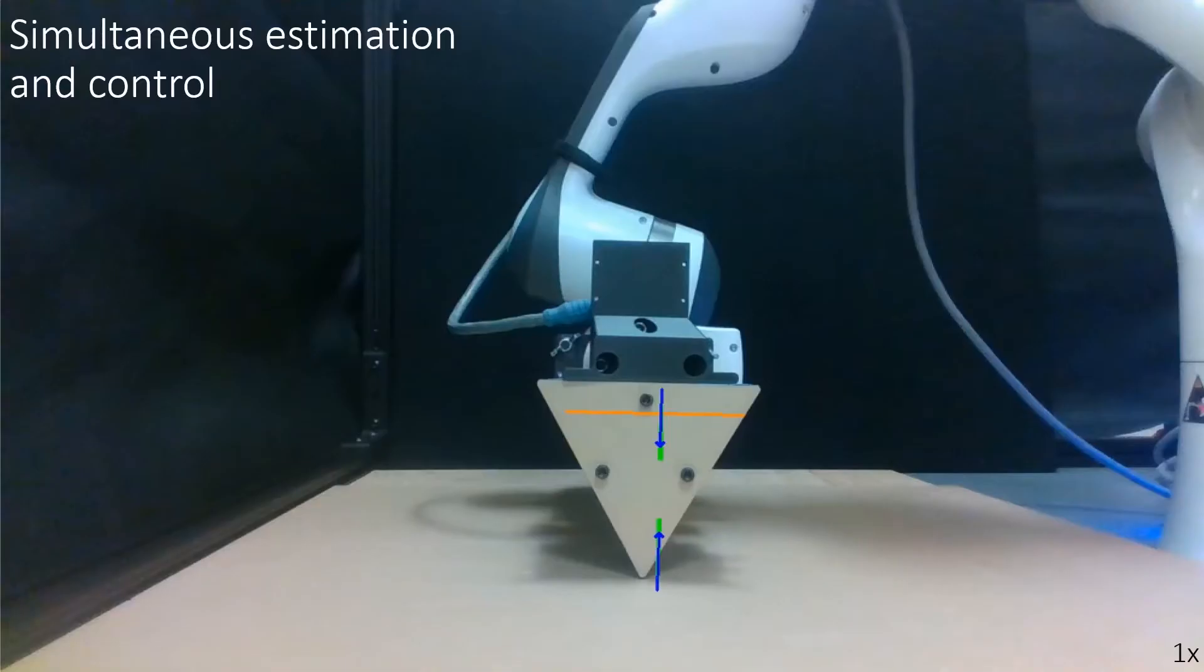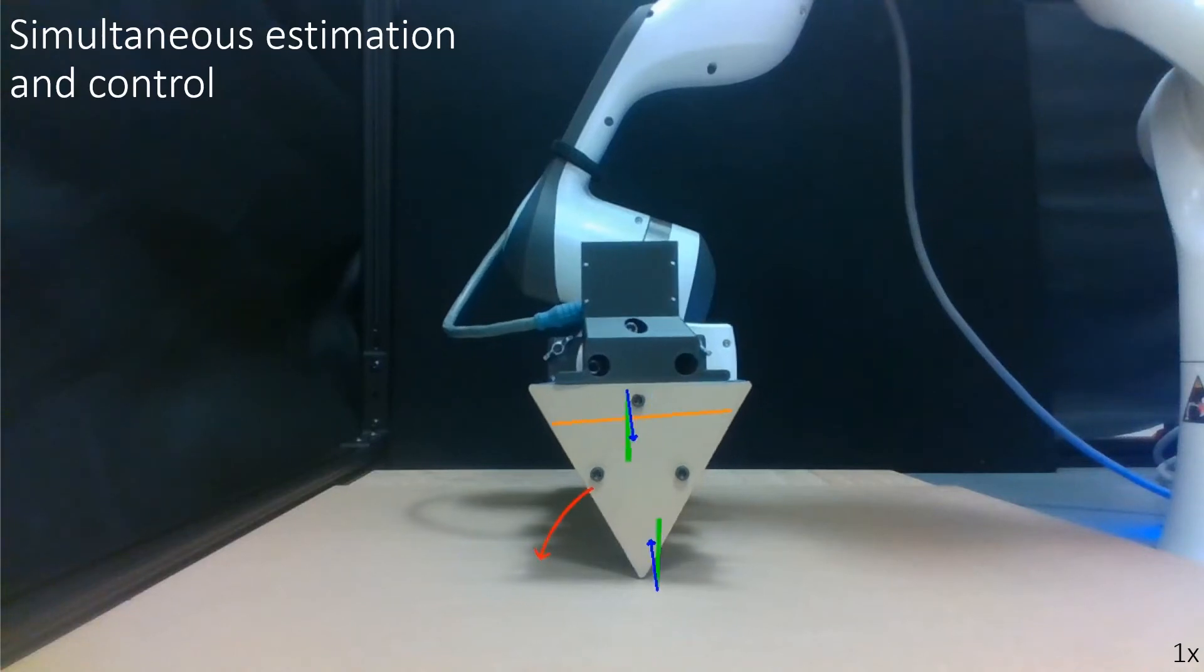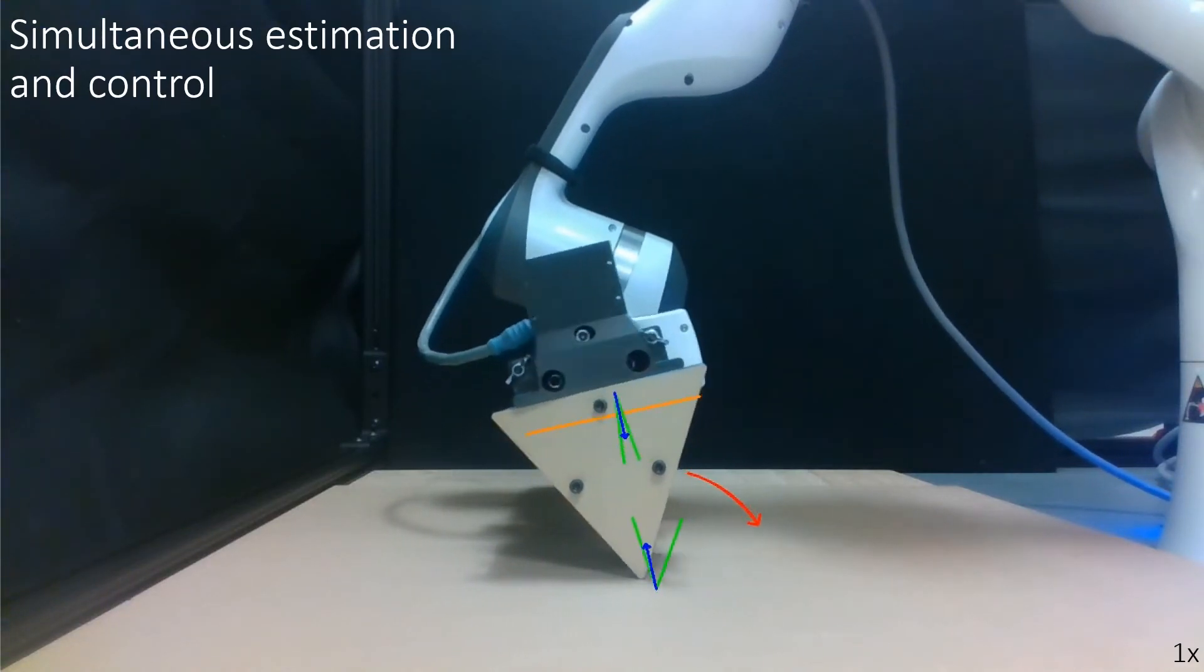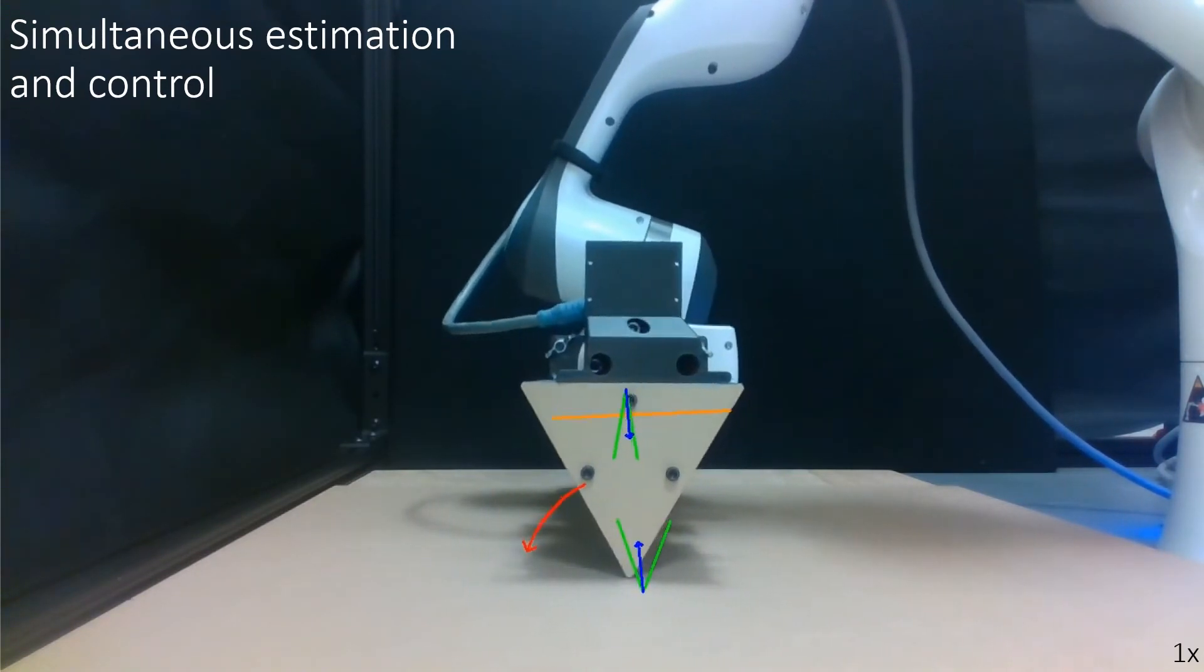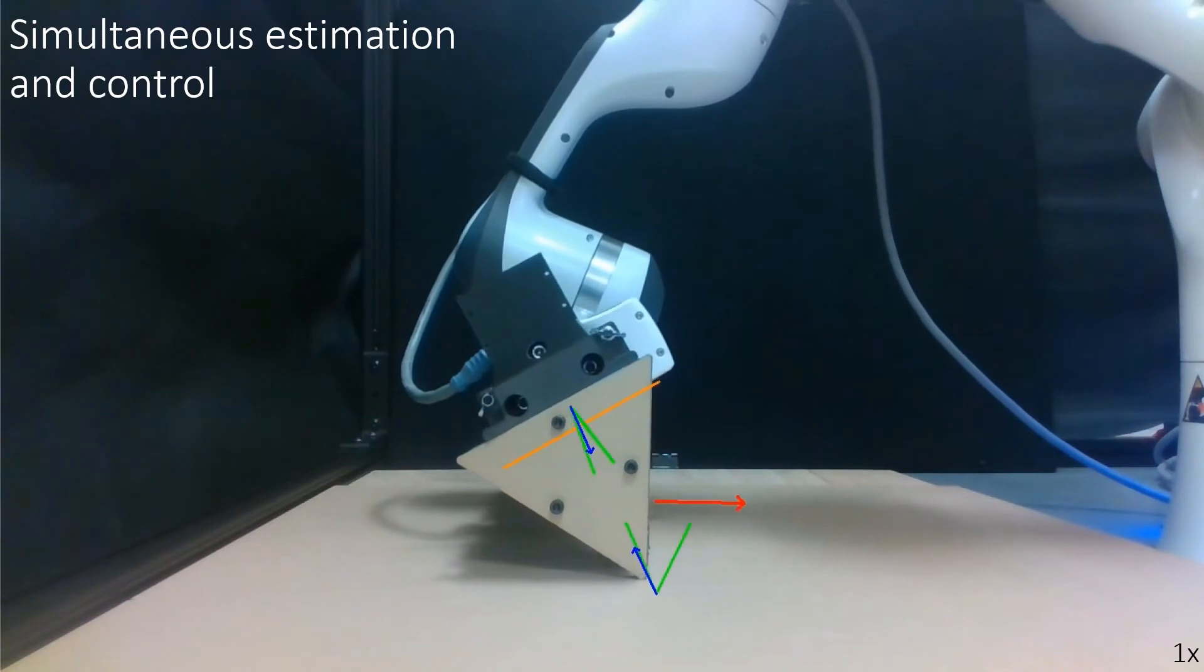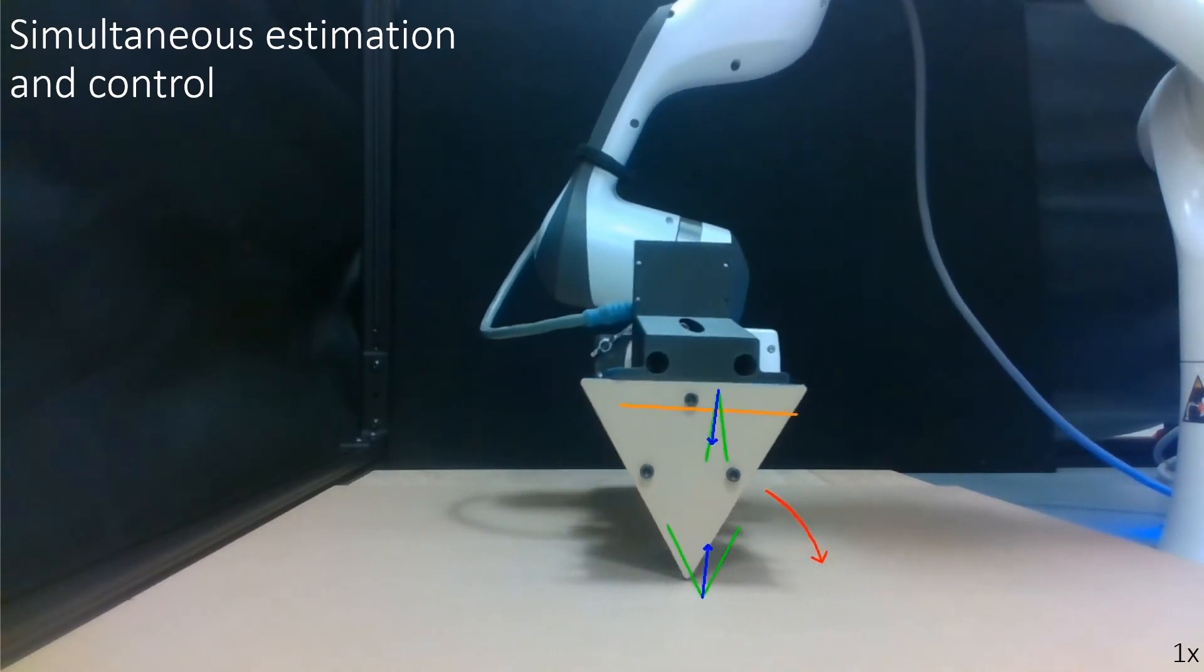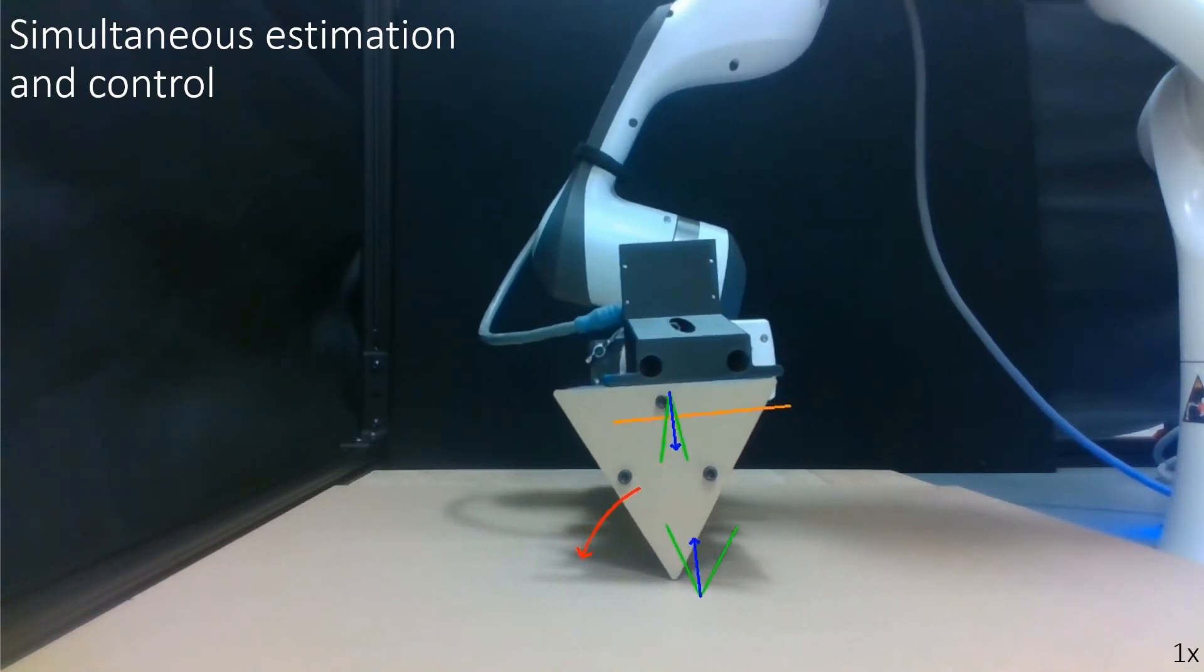The contact configuration estimator and controller work together to manipulate an unknown object. The controller, initially using naive estimates of the friction parameters and pivot locations, executes a series of motions that improve these estimates. Better estimates can then improve control by expanding the feasible region of the quadratic program.